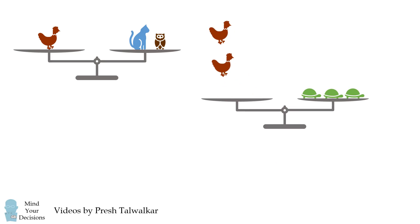The weight of one chicken is equal to that of one cat plus one owl. So two chickens will have the weight of two cats and two owls.